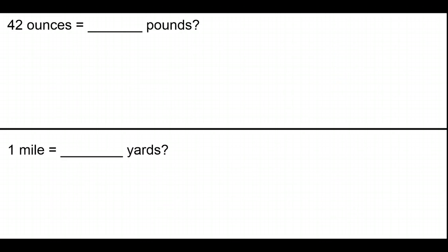Here are the last two problems. Go ahead and pause the video and see what you can do about converting 42 ounces to pounds and 1 mile to yards. Keep in mind which unit is bigger — are we converting to or from a bigger unit? And remember that your conversion fraction must be oriented so that you can cancel the units, otherwise you won't end up with the correct units or numbers.